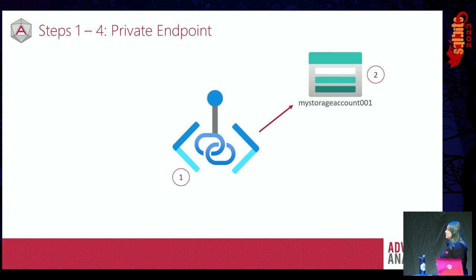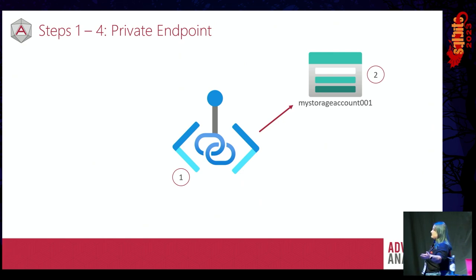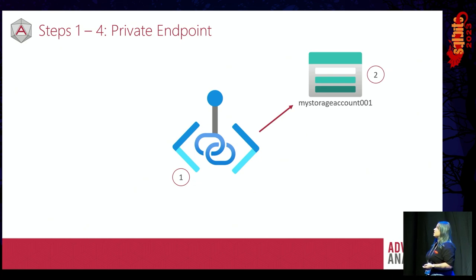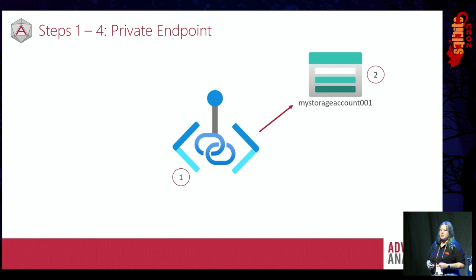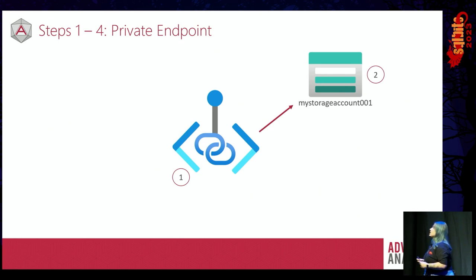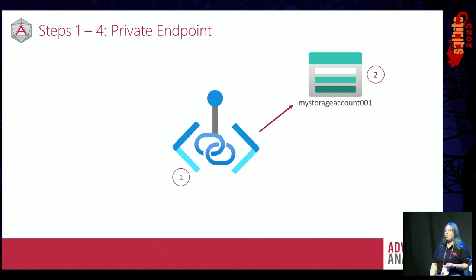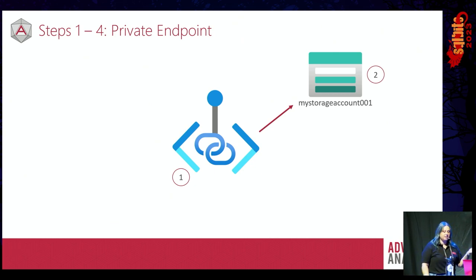Secondly, if you just deploy a private endpoint resource and don't tell it what it's for, it's not going to know. A private endpoint is inherently linked to another Azure resource — a coupled Azure resource. You have to tell it this is the specific storage account that I want this private endpoint to be for. That's step two.